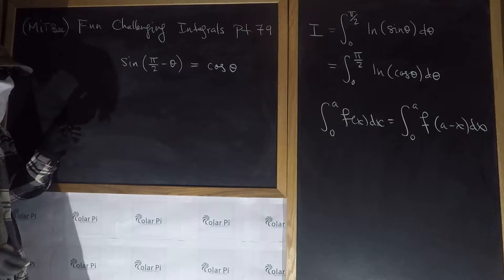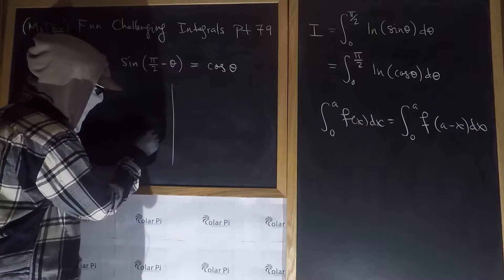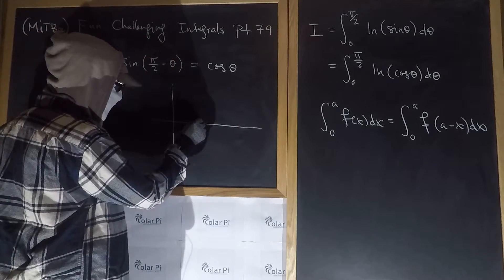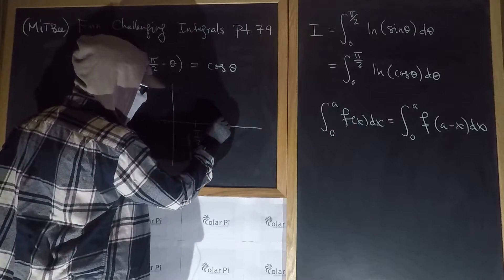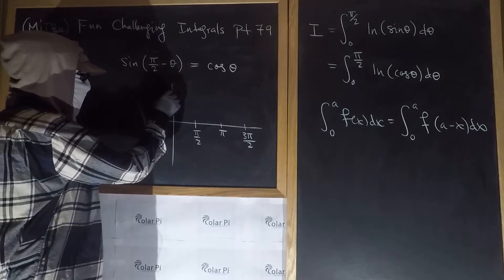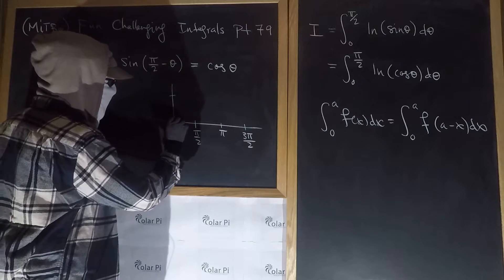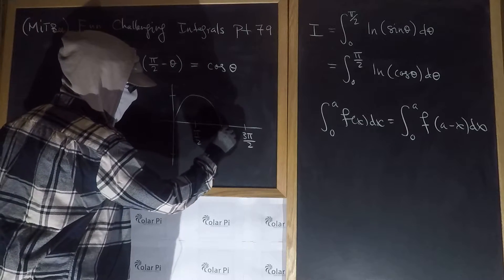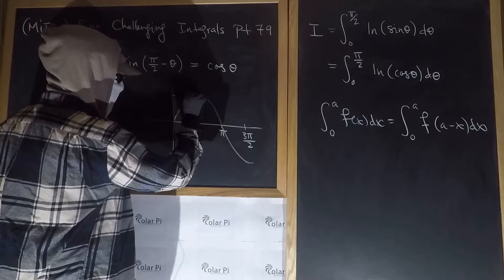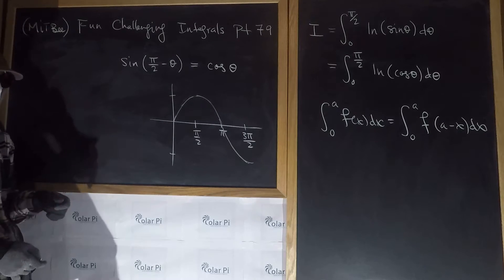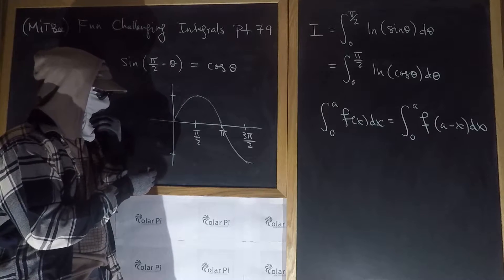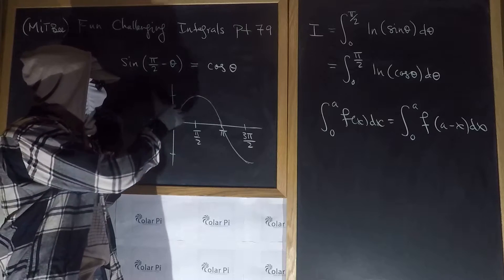We could use the sine angle difference formula, but the most fun way is to look at the visual. Let's say this is π/2 — sine looks something like this, and cosine looks like this. That's what we're working with here: sine of π/2 minus θ.